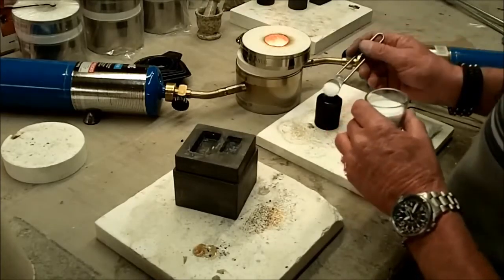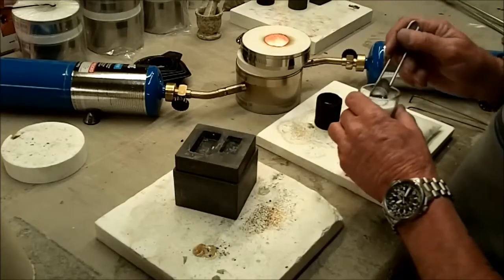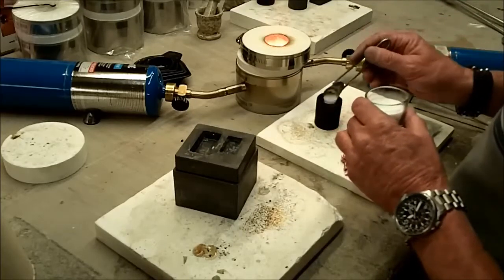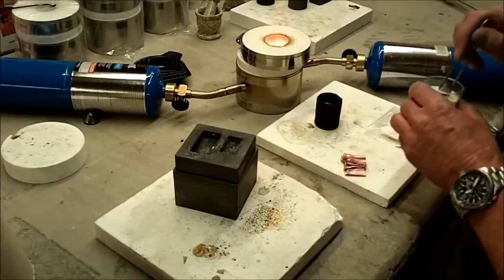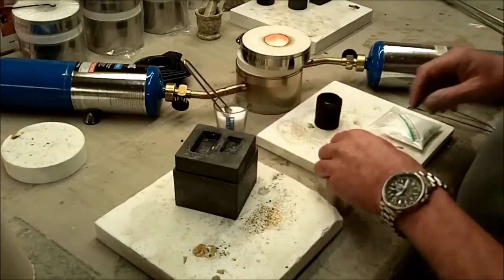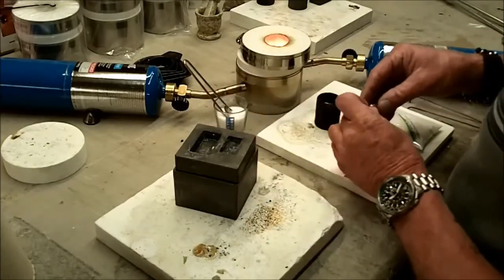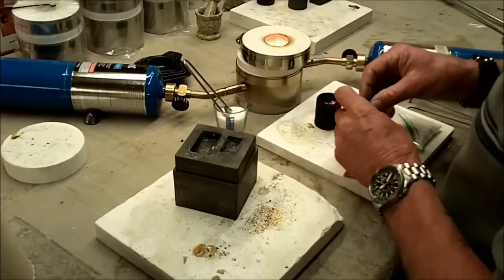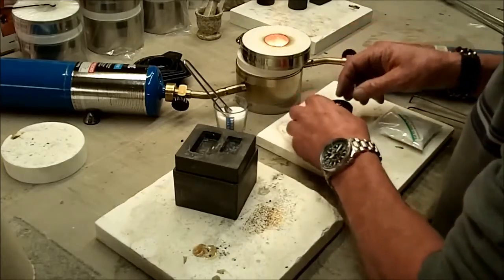So the first thing we're going to do is put about three quarters of a teaspoon or so of our flux in the graphite crucible, and we're going to put these pieces of scrap copper in.